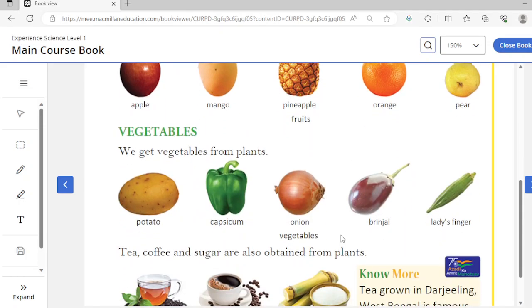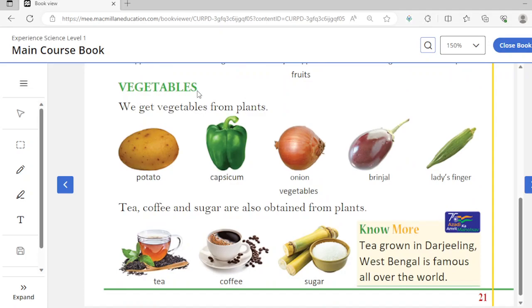After fruits, what else do we get from plants? Vegetables. We get vegetables from plants. Here are examples of vegetables: potato, capsicum - does anyone know what capsicum is called? Shimla mirch, right. Then onion, brinjal, lady finger.